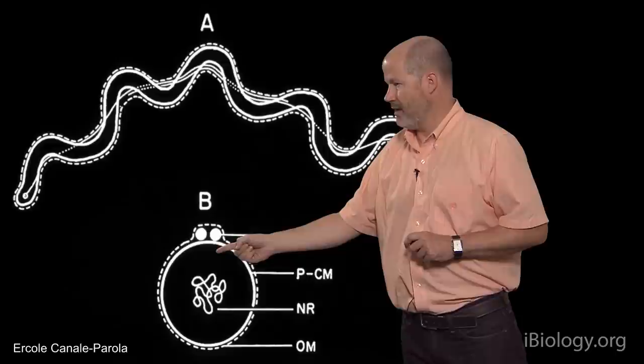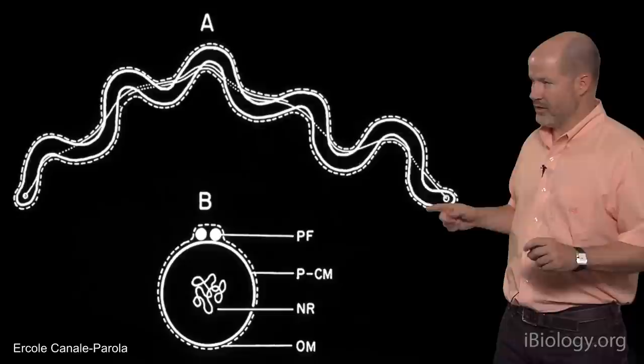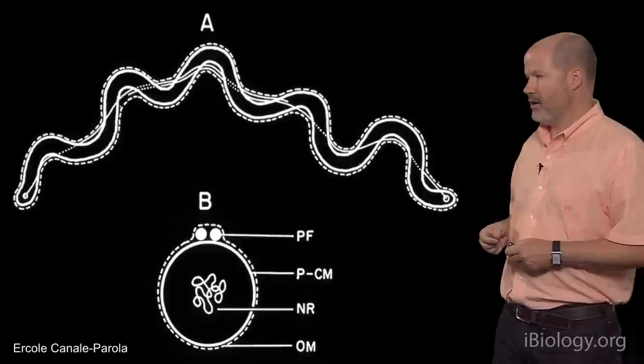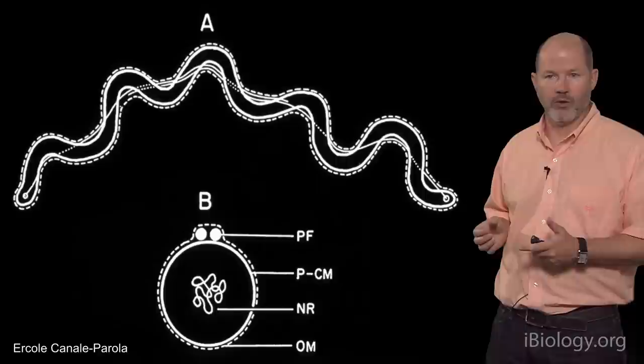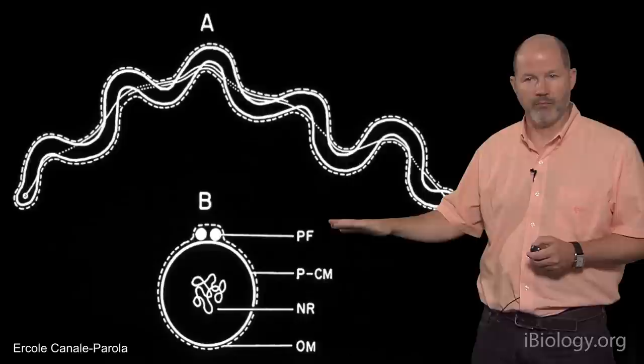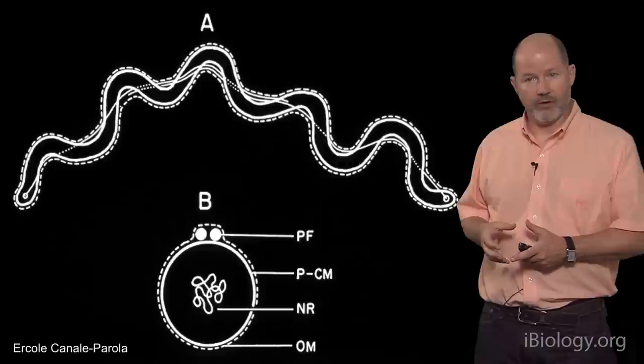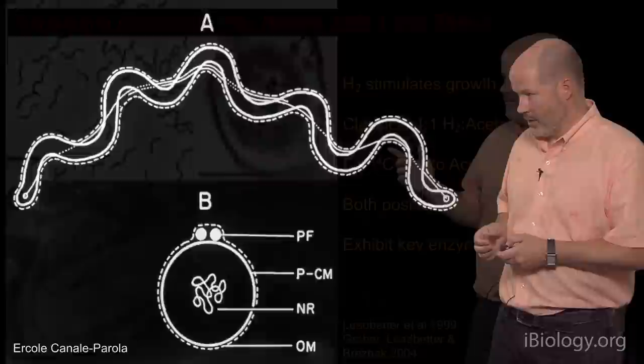Looking at a cross-section, you can see these flagella lying between the inner and outer membrane. When those flagella turn, the entire cell becomes the propeller — as opposed to being attached to the propeller. Spirochetes are known to move into very thick, viscous environments and are sort of the world record holders in the microbial world for being able to wiggle into really thick and tight places. All organisms with this body plan are related to each other, both by genetics and by their body plan.